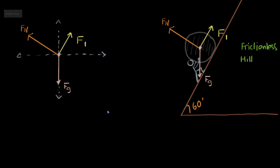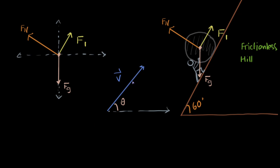Let's take a general vector V — not the velocity vector, but a general vector V — and it has an angle theta with the horizontal. Remember, vectors have both magnitude and direction, which is the angle. So we have angle theta and vector V. How are we supposed to convert that into its horizontal component Vx and its vertical component Vy?